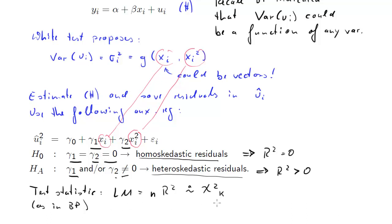This test statistic is asymptotically chi-squared distributed with k degrees of freedom. Here we are including two terms in the auxiliary regression, therefore k is equal to 2.